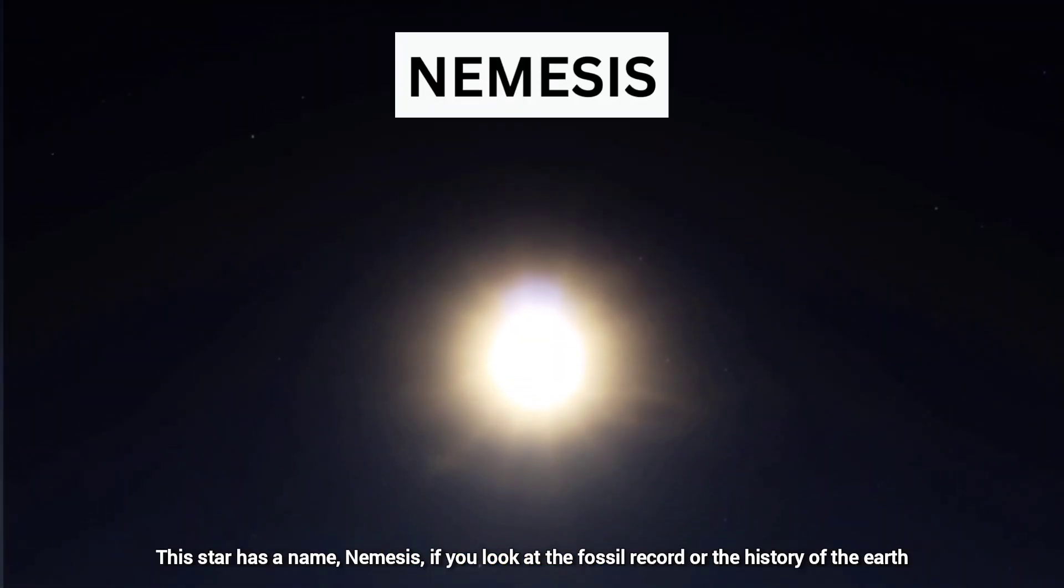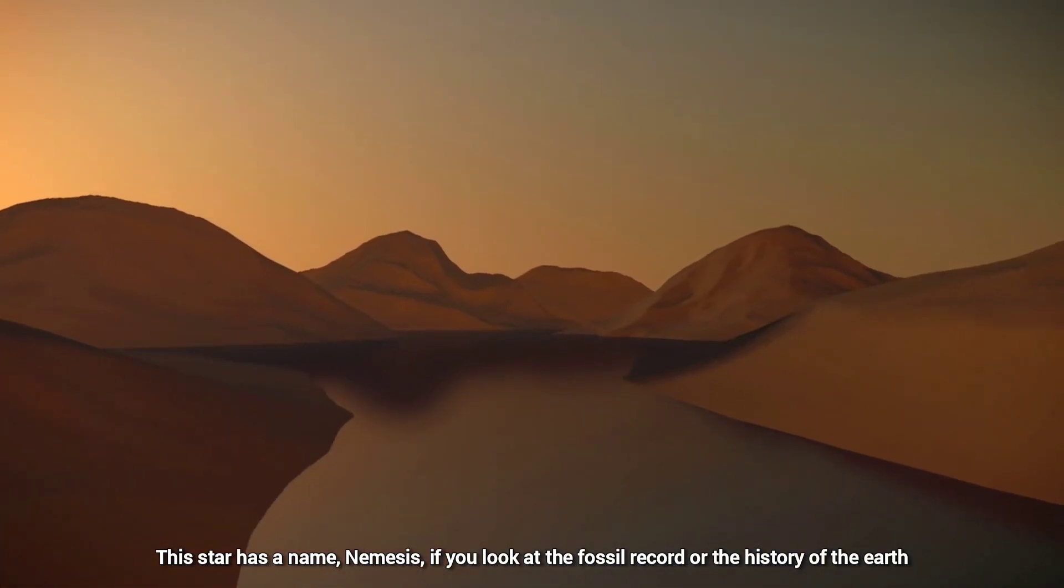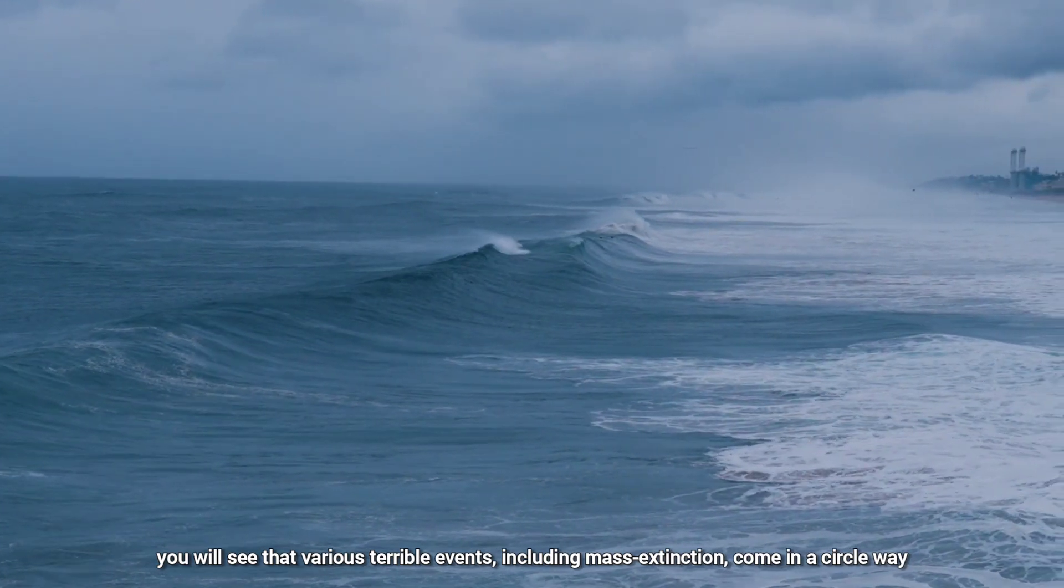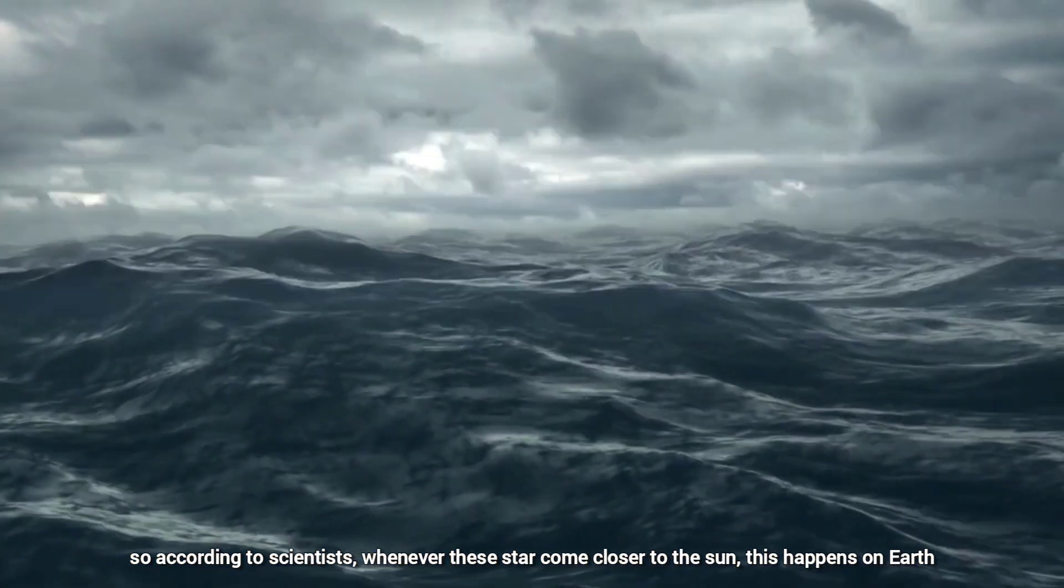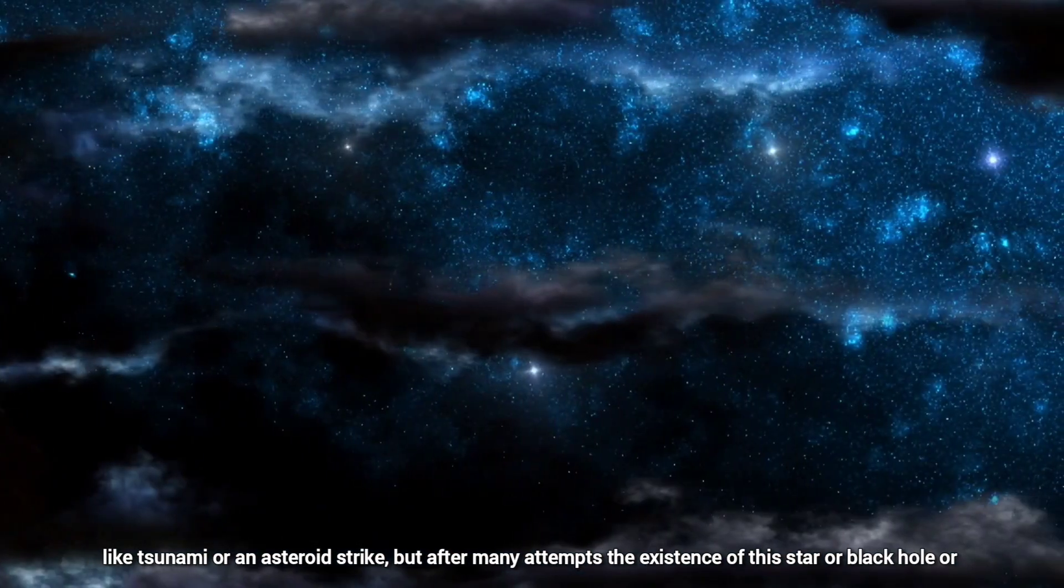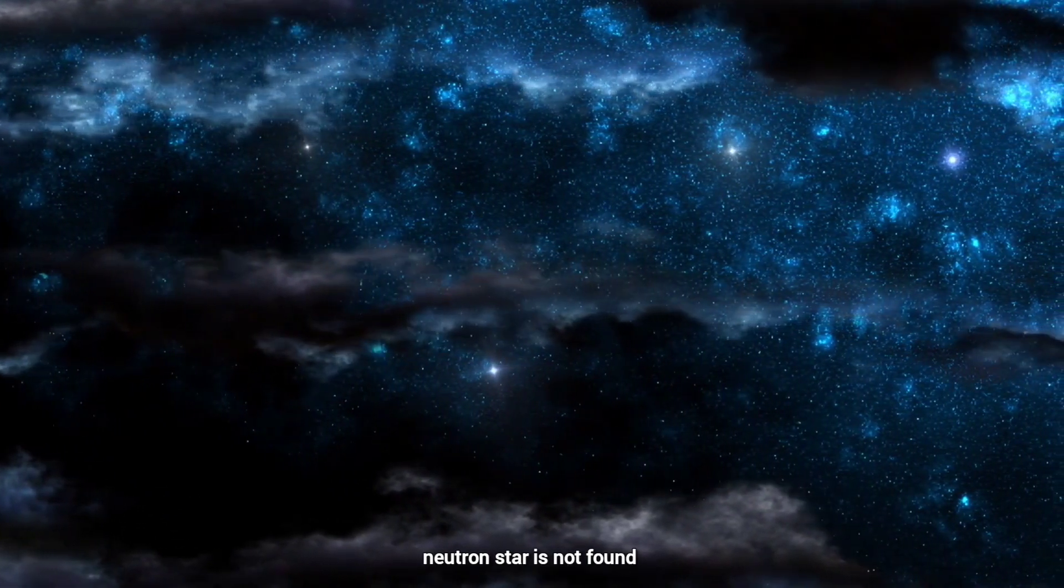This star has a name: Nemesis. If you look at the fossil record or the history of the Earth, you will see that various terrible events, including mass extinction, come in a circular way. So according to scientists, whenever this star comes closer to the Sun, this happens on Earth, like tsunami or an asteroid strike. But after many attempts, the existence of this star or black hole or neutron star is not found.